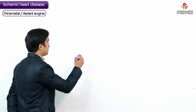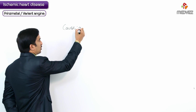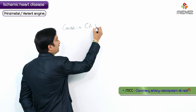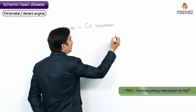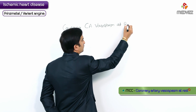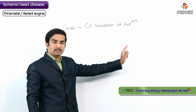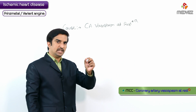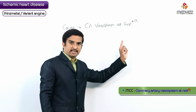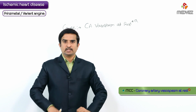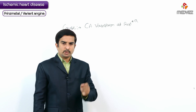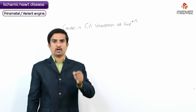The main problem and most common cause for Prinzmetal variant angina is an important MCQ point. The cause is coronary artery vasospasm at rest. Whenever a question asks about the most common cause of Prinzmetal variant angina, the answer is coronary artery vasospasm at rest.